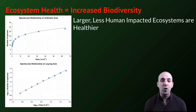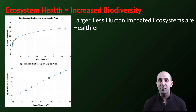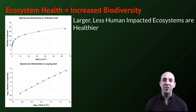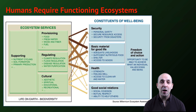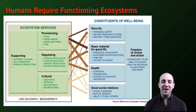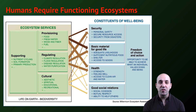Even though we haven't discovered it all, we are acutely aware that the health of an ecosystem is connected to its biodiversity. In general, larger ecosystems removed from human impacts and other disturbances tend to be healthier and more robust. This diagram represents that fact with species-area curves: the larger the area of the ecosystem, the more species we find and the more biodiverse it is. We require functioning ecosystems to remain alive, healthy, and within a functional human society, so it is in our interest to keep ecosystems as healthy as possible into the indefinite future.